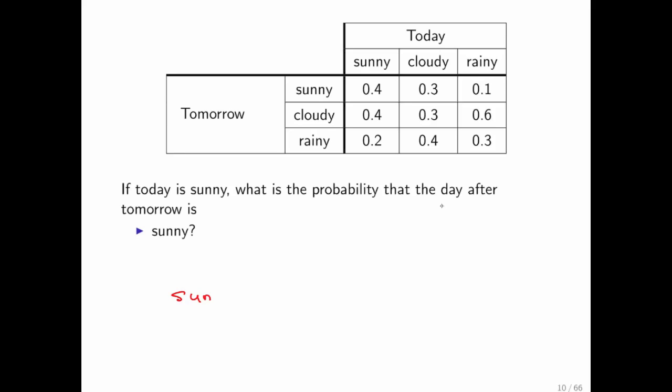And we say, okay, today is sunny, which means that tomorrow it might be sunny or cloudy or rainy. And if today is sunny, then the probability of it being sunny tomorrow is 0.4 - we get that right here. It being cloudy is 0.4 - we get that right here. And it being rainy is 0.2 - it's right here.